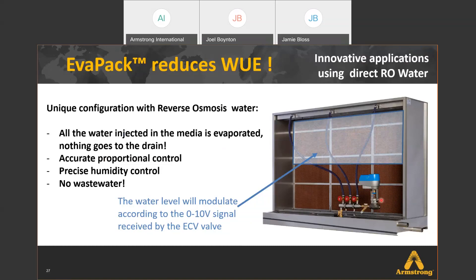Here's a picture of our ECV electric valve. The water level will modulate according to a 0-to-10 valve signal received by the ECV valve, giving a very tight turndown ratio of about 37 to 1, so we can control very tight levels.